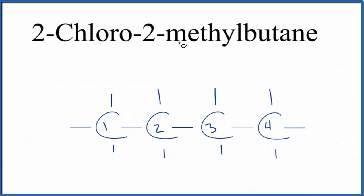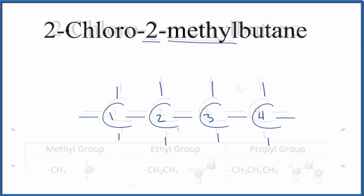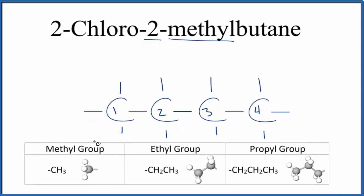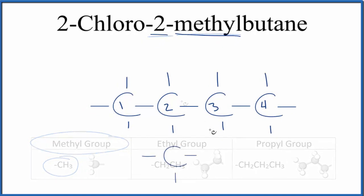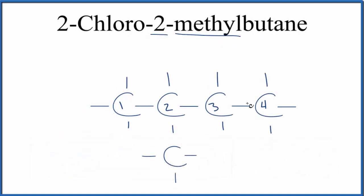So with our butane, we know that on the second carbon, carbon-2 here, we have a methyl group. Methyl group looks like this. So the methyl group, that's just a CH3. And we're going to put the methyl group on the second carbon right here, like this. So far we have 2-methylbutane.